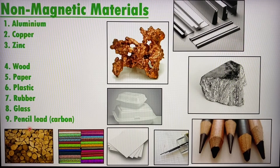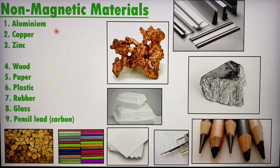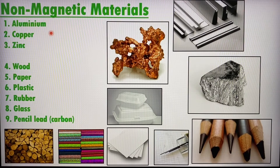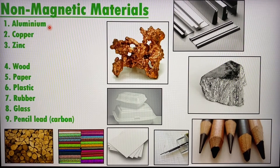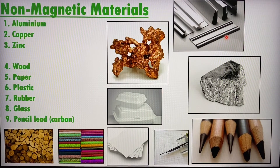Next, non-magnetic materials. We have aluminum, copper, and zinc. Why are these three here together? Because they are actually metals, but they are non-magnetic. There are quite a few more non-magnetic metals out there, but I'll just mention these three: aluminum, copper, and zinc. This is how aluminum looks like, this is copper, and this is how zinc looks like.